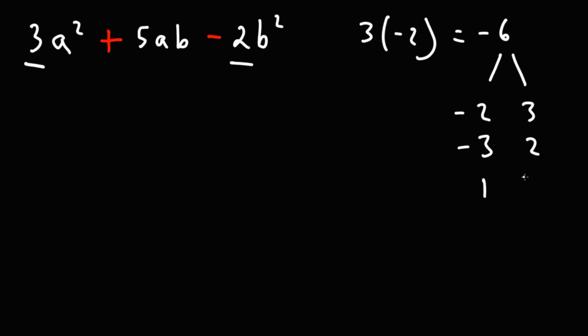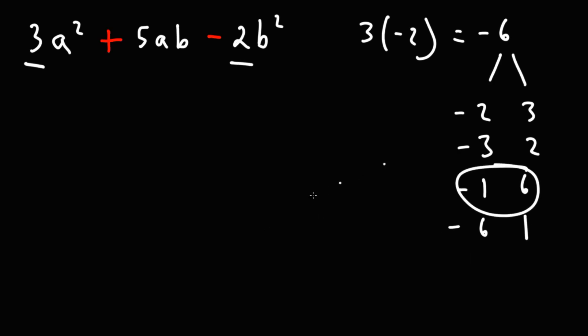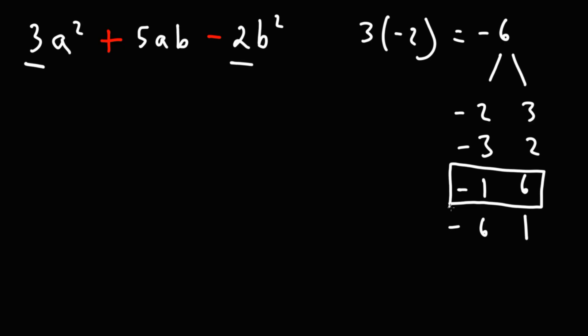We could also use 1 and 6 or 6 and 1. Both negative 1 times 6 or negative 6 times 1 multiply to negative 6. Negative 6 plus 1 adds up to negative 5, but negative 1 plus 6 adds up to positive 5. So this is the pair of numbers that we want to use.